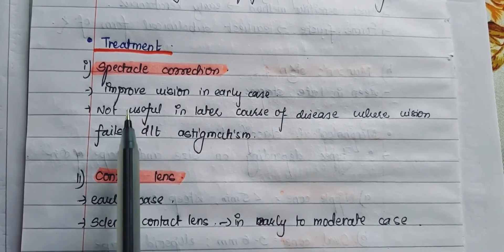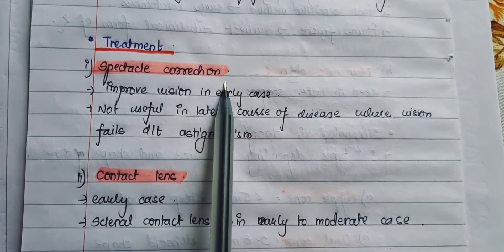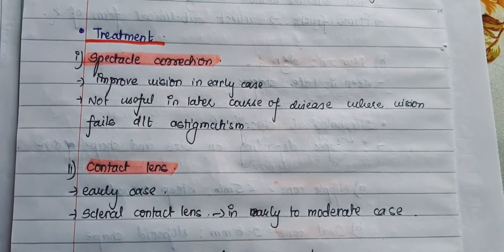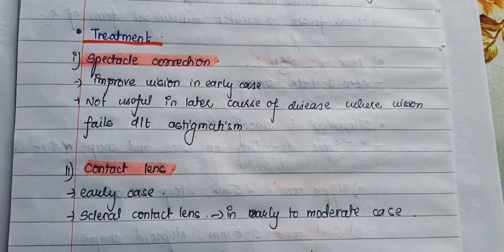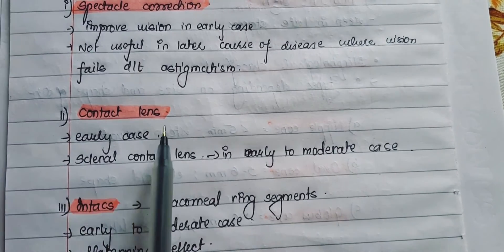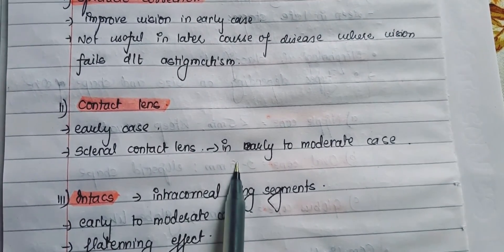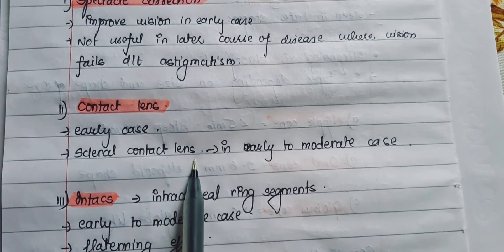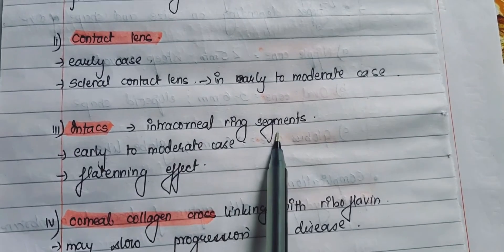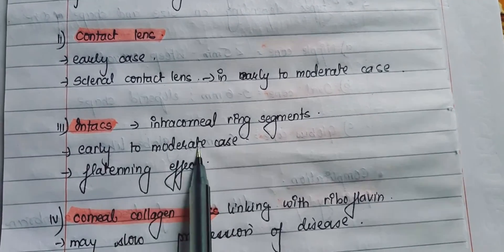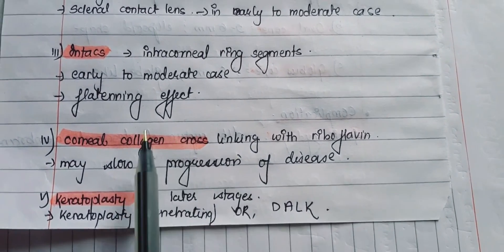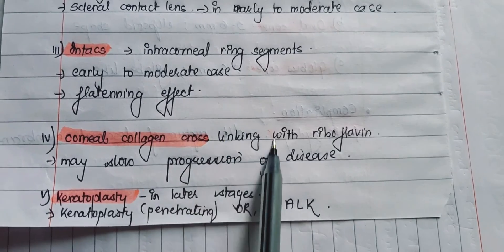Treatment for keratoconus begins with spectacle correction, which improves vision in early cases but is not useful in the later course of the disease. Contact lenses can also be used in early cases, and a special scleral contact lens can be used in early to moderate cases. Intacs or intracorneal ring segments can be used in early to moderate cases and work by their flattening effect. To slow progression, corneal collagen cross-linking with riboflavin can be performed.